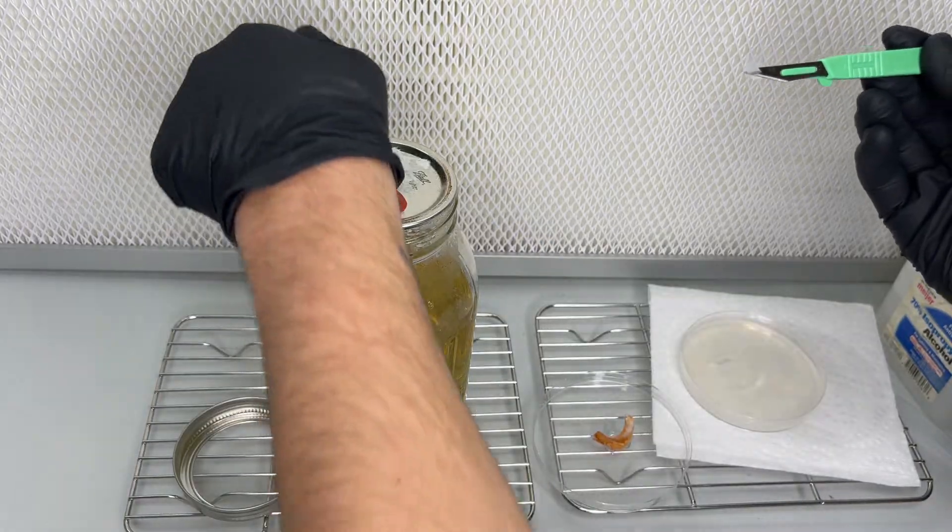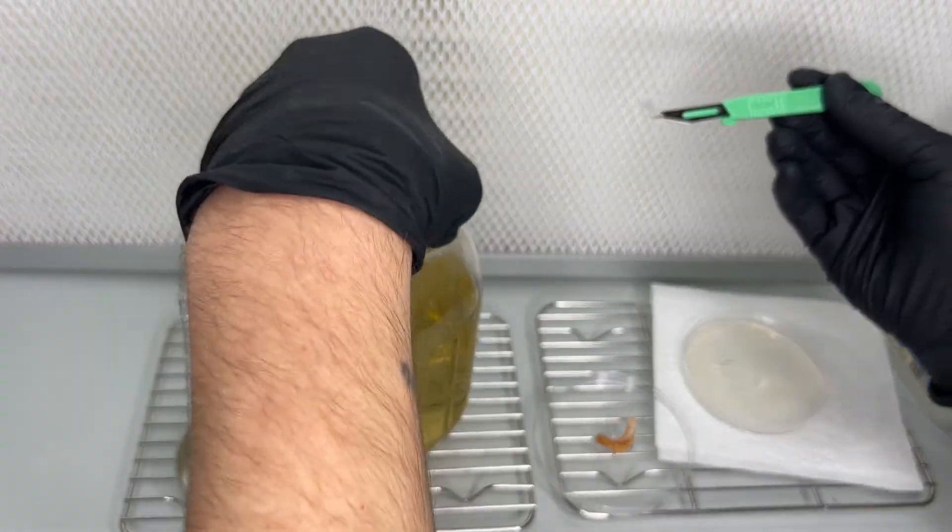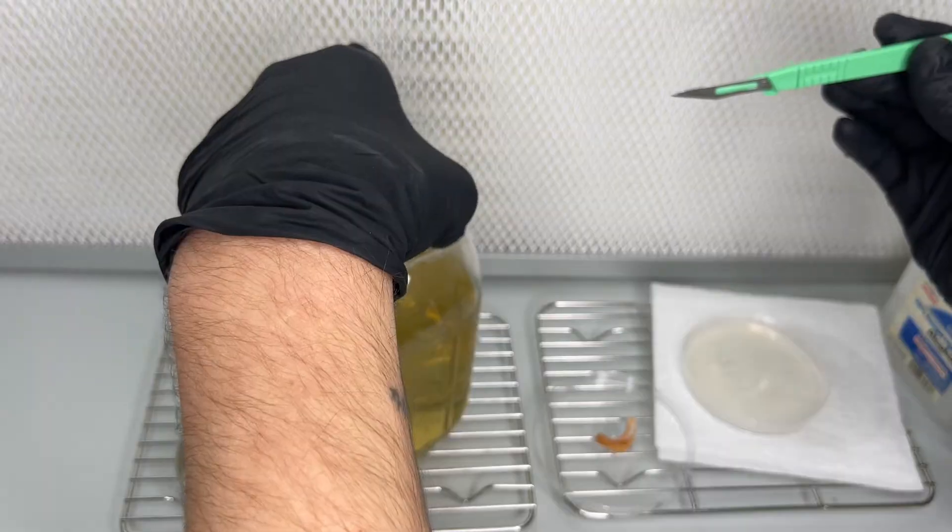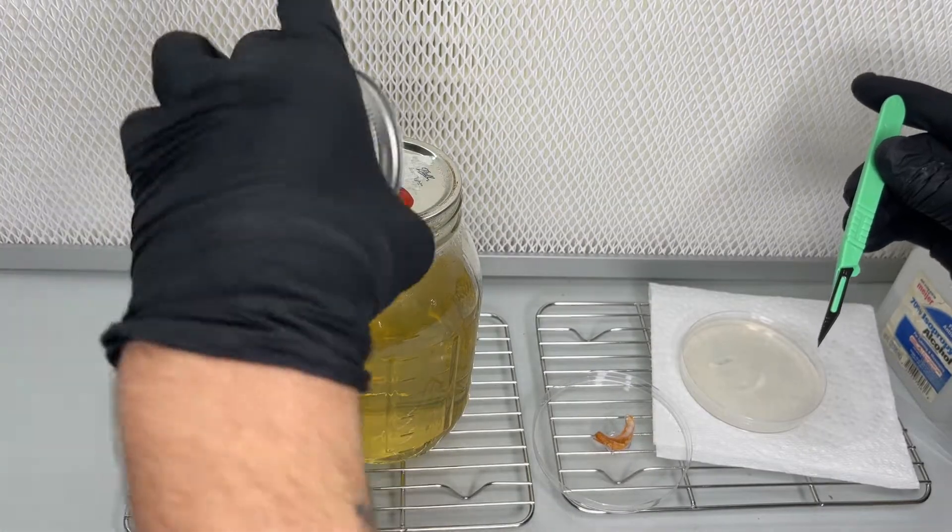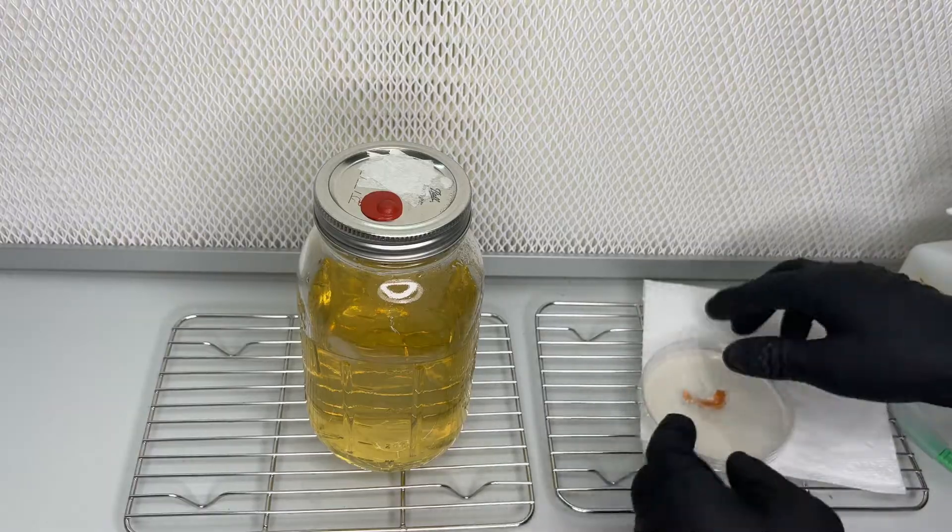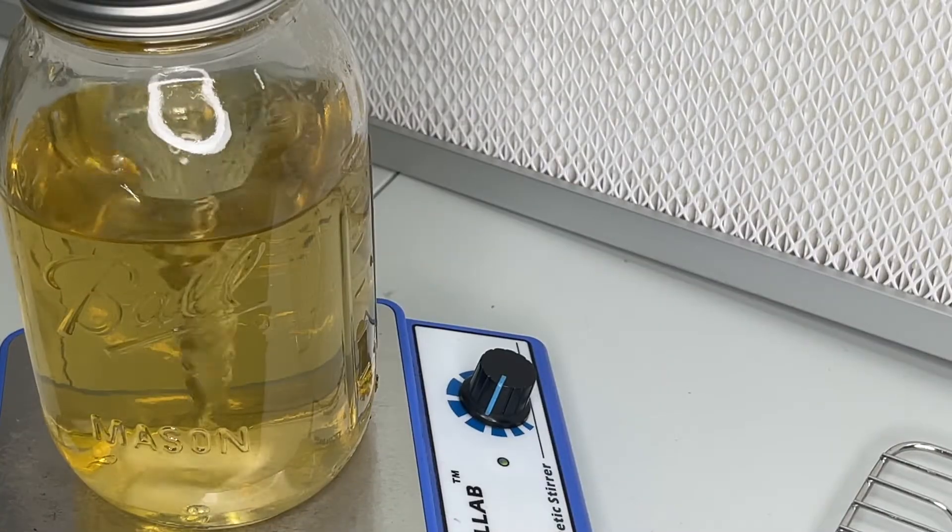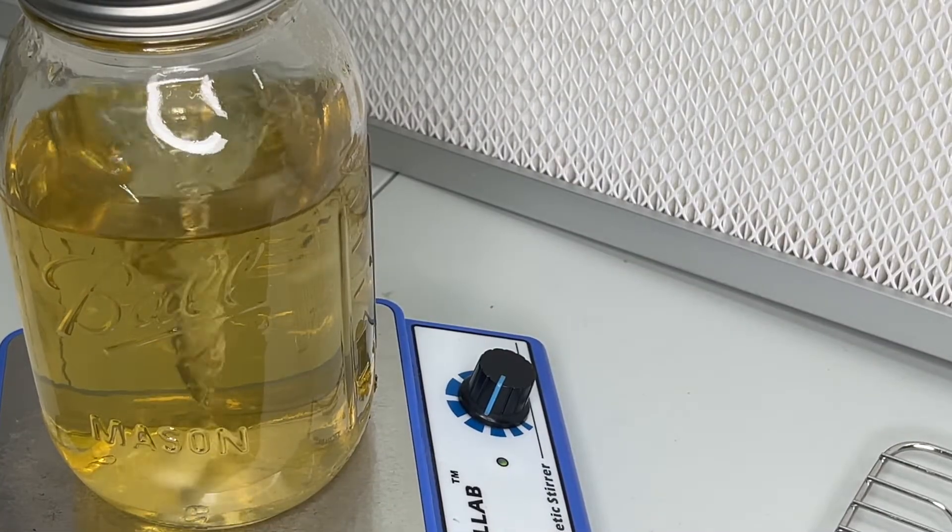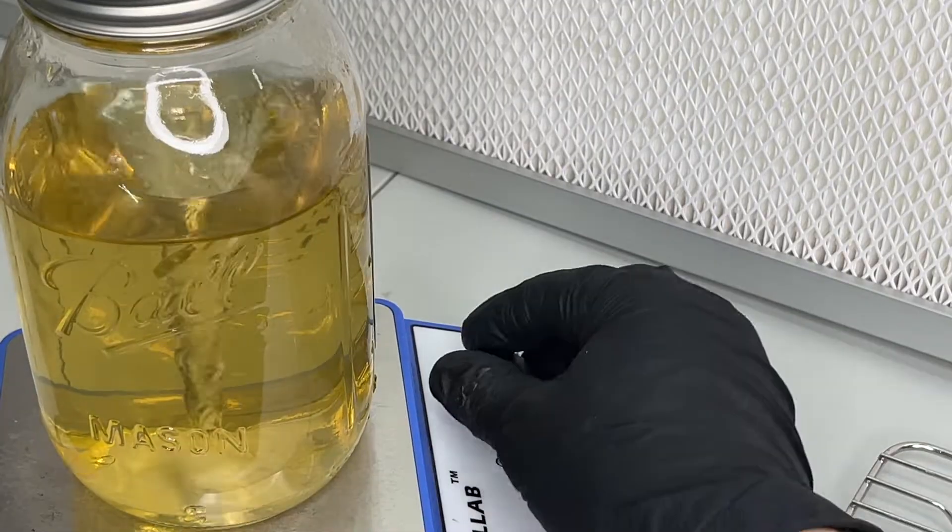After the wedge of mycelium has been added to the liquid culture jar, it is magnetically stirred for a few minutes every day for two weeks and stored at 70 degrees Fahrenheit. After about two weeks, it should have generated enough mycelium to make multiple syringes.